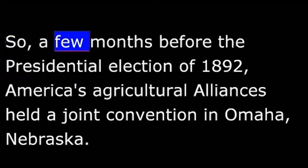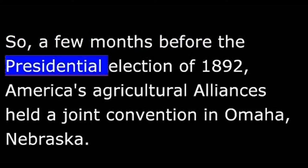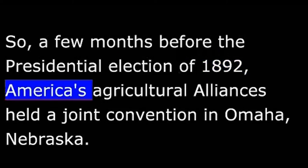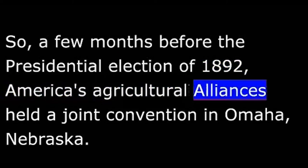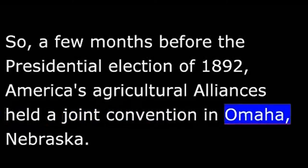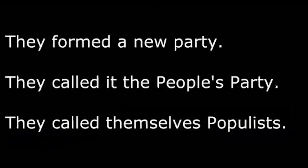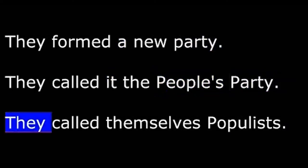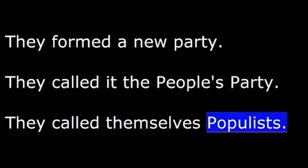They held almost no power at the national level. So a few months before the presidential election of 1892, America's Agricultural Alliances held a joint convention in Omaha, Nebraska. They formed a new party. They called it the People's Party. They called themselves Populists.